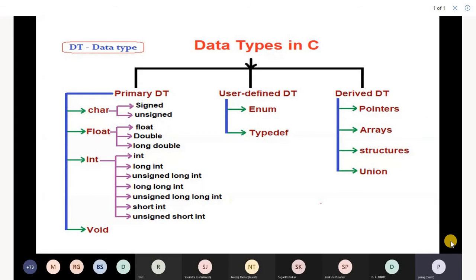Enum weekdays equals, in opening and closing braces, Monday, Tuesday, Wednesday, Thursday, Friday, Saturday. So Monday will be given a value 0, Tuesday will be given a value 1.